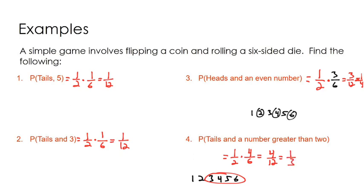So out of all these different experiments, it looks like the tails and a number greater than two has the greatest probability of happening.